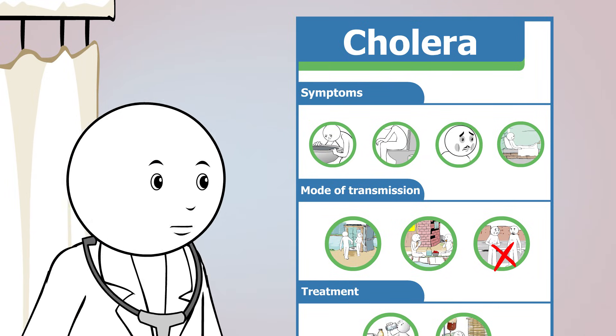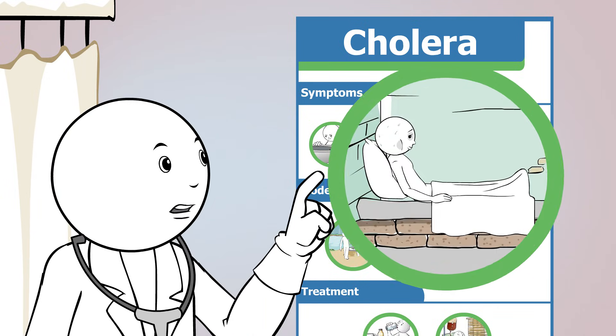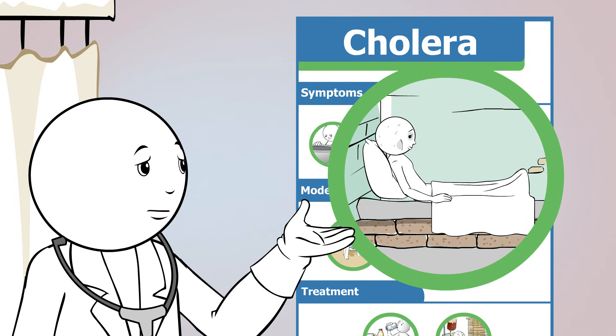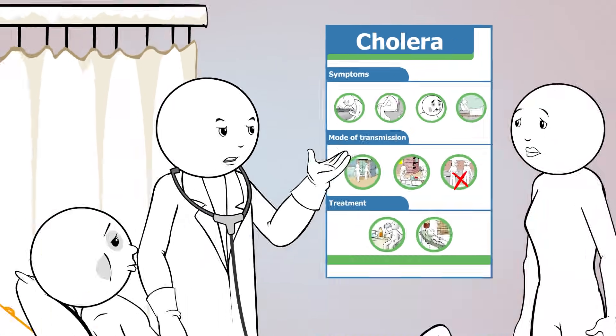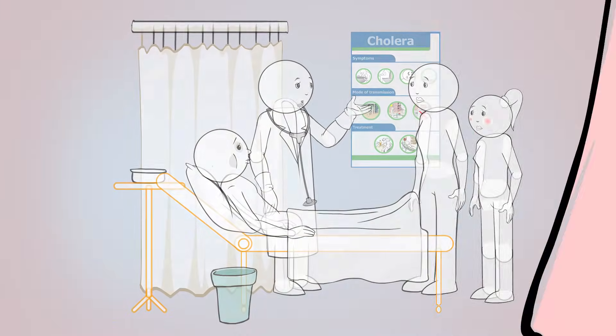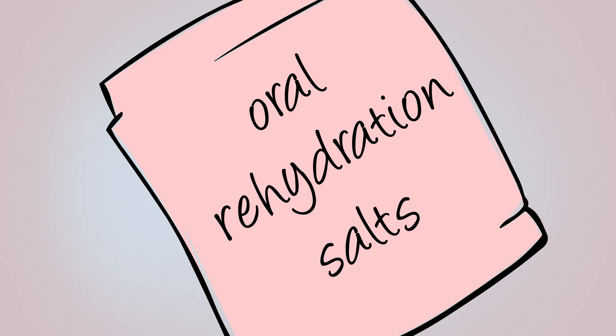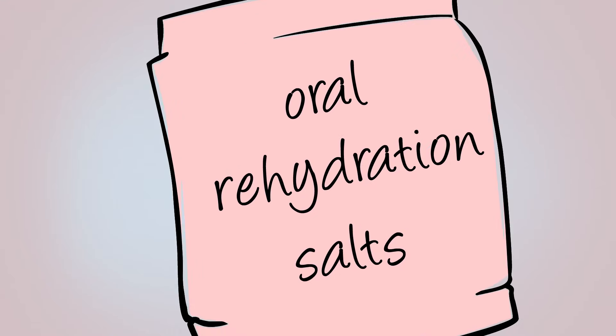Watery diarrhea and profuse vomiting result in severe dehydration and can lead to death if not treated promptly. So treatment should start immediately by taking oral rehydration salts to compensate for the rapid loss of bodily fluids and minerals.